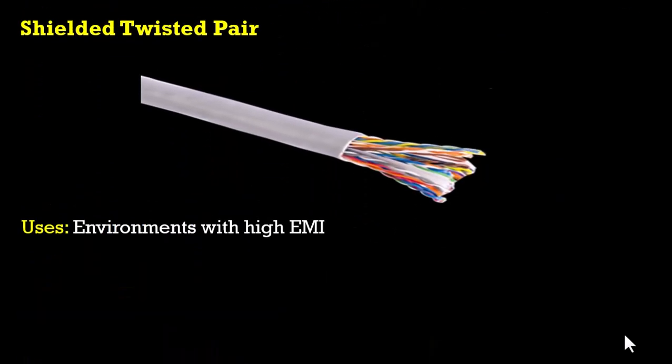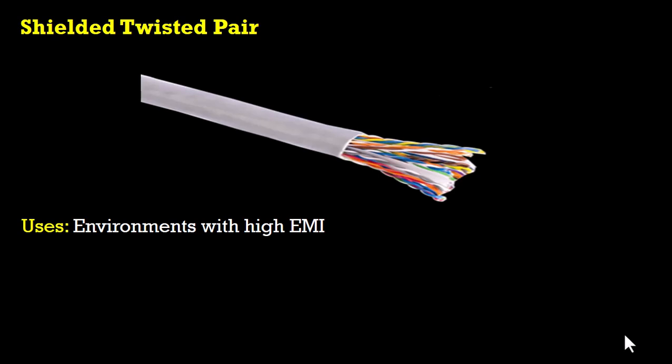Taking a look at the shielded twisted pair, it is used in environments with high electromagnetic interference, giving it better performance in noisy environments. The disadvantage of the shielded twisted pair is that it is more expensive and it is less flexible than the unshielded twisted pair.